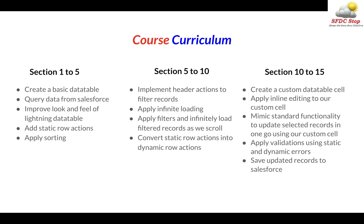I think the first 5 sections alone should solve about 50% of the use cases where you need to implement lightning data table. In the next 5 sections, we will implement header actions to our lightning data table, using which we can filter records. We will apply infinite loading and fix it so that it works properly with applied filters as well. And finally, we will convert our static row actions into dynamic row actions.